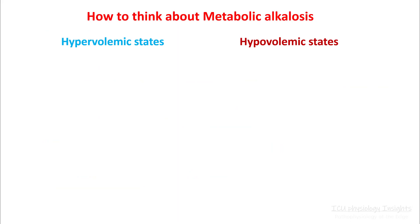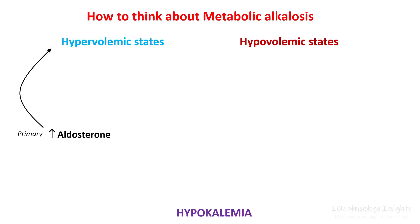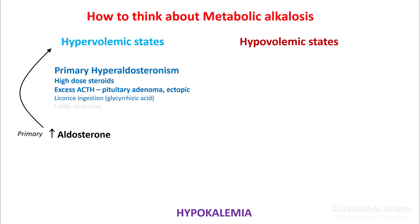Whenever you deal with metabolic alkalosis, volume status is the most important. Try to figure out if the patient is hypervolemic or hypovolemic. Both of these conditions will be hypokalemic. Hypervolemic state is seen in primary increasing aldosterone such as primary hyperaldosteronism, high-dose steroids, excess ACTH, etc.